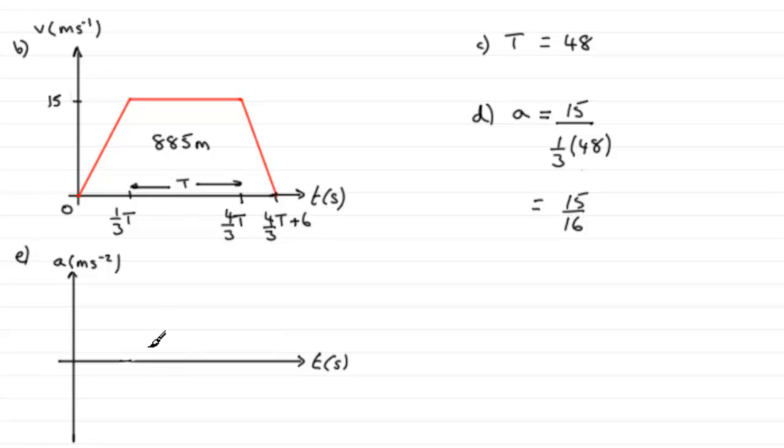When it comes to the specific times, we've got them marked off here, but we found out earlier that T was 48 in part C. So directly under here, this value is going to be a third of T.